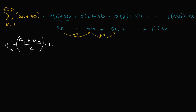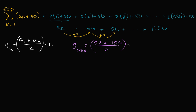So if we apply it to this case, we're trying to take the sum of the first 550 terms. It's going to be equal to the first term — that's 52 — plus the last term, the nth term, 1150. It's really just the average of those two, the average of the first and the last term, and then times the number of terms we have, times 550.